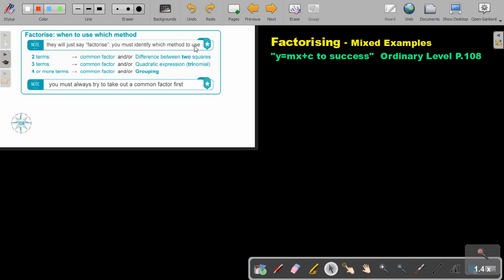You must identify which method to use. If there's two terms, it can either be a common factor and or difference between two squares. If there's three terms, it can either be a common factor and or quadratic expression trinomial. If it's four or more terms, a common factor and or grouping. Did you see that every time I start with common factor? So you must always try to take out a common factor first. And then if it's two terms, try difference between two squares. Three terms, trinomial. Four or six or more terms, try grouping.